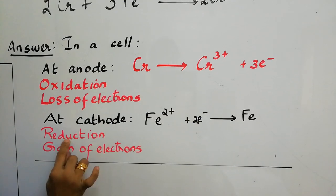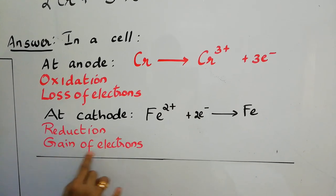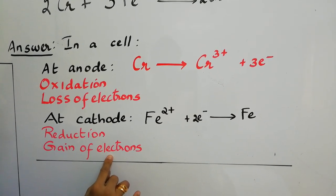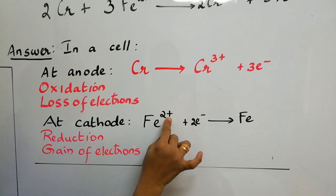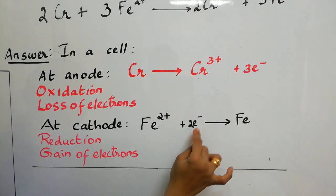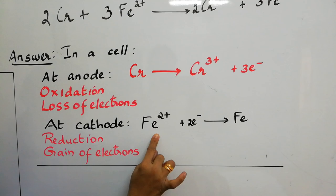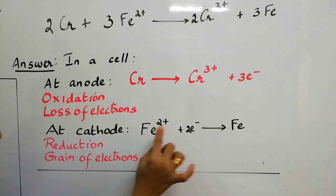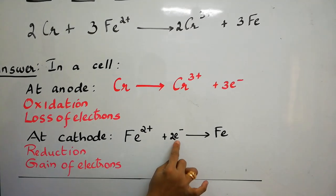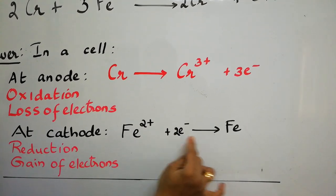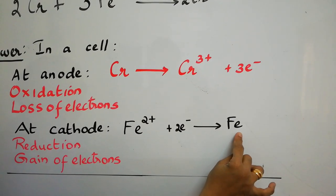At cathode, reduction takes place, gain of electrons. Which means Fe 2 plus has taken up 2 electrons. It is gaining 2 electrons to become Fe, because the charge is 2 plus and the electrons over here cancel each other to become a neutral Fe atom.